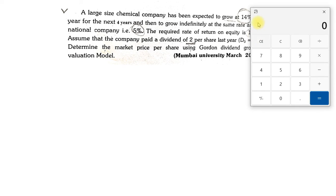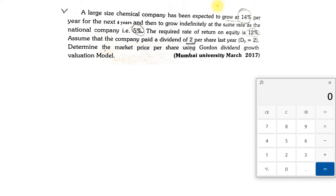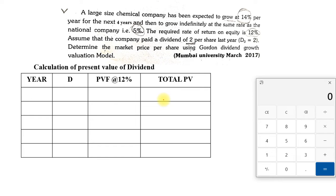Now let us see how to solve this kind of question. They are giving you: the growth rate is 14% every year for the next four years, after that it will grow indefinitely at 5%, the rate of return is 12%, and the dividend was two rupees per share last year. So every year that dividend is going to increase by 14%. Step number one: we will first calculate the present value of dividend. We make a table with the years, the dividend, PV factor at 12%, and total PV. Since they are giving data for the next four years, we write years one, two, three, four.